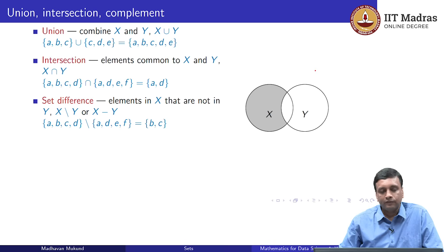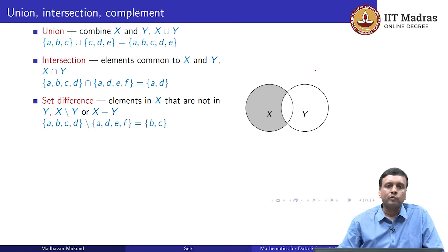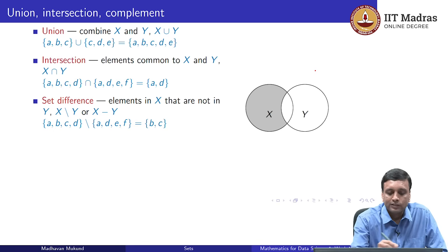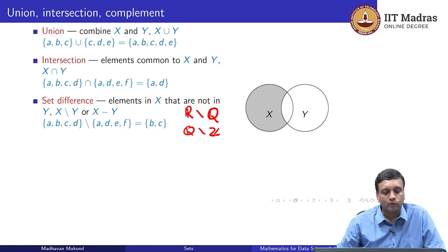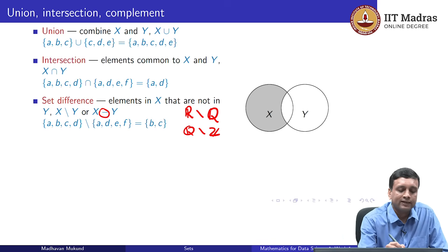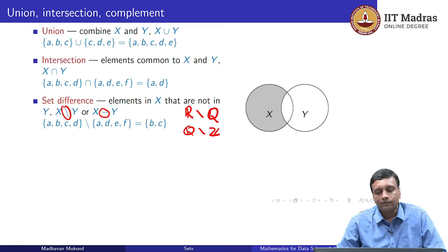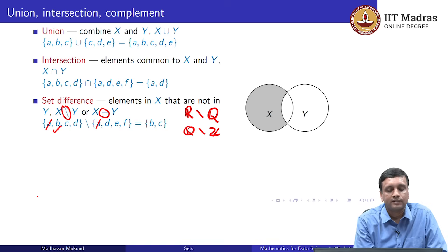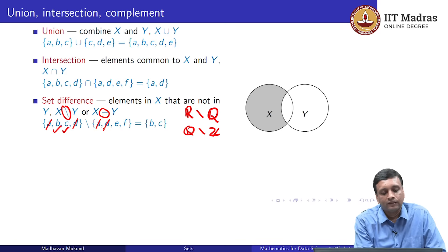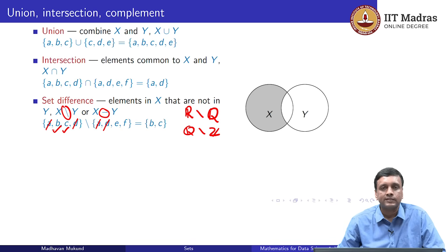Another operation on sets is called set difference. In set difference, we take two sets and want to know what is in the first set that is not in the second. For instance, which real numbers are not rational, or which rational numbers are not integers. We write this using either a minus sign or a backslash notation to indicate set difference — all elements in the first set which are not in the second. For example: A is in both sets so it is not counted; B is in the first but not the second, so B is in the set difference; C similarly; D appears in both so D is not counted. The first set minus the second set gives {B, C}.